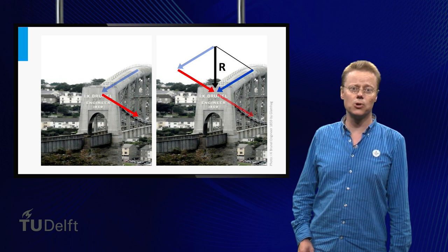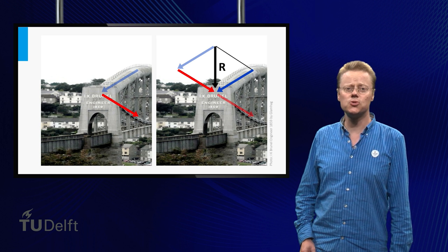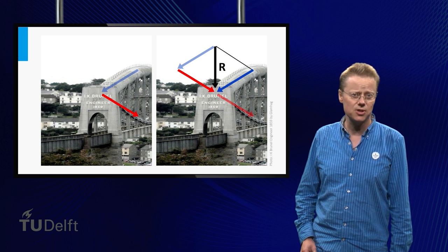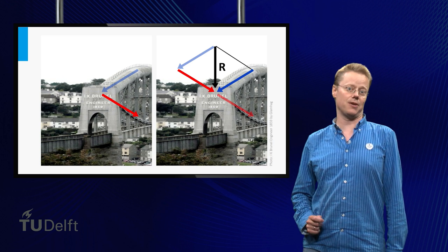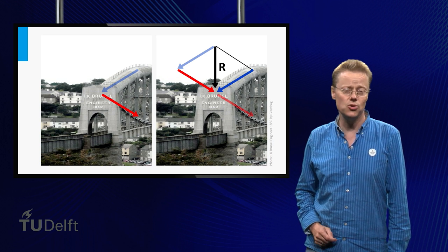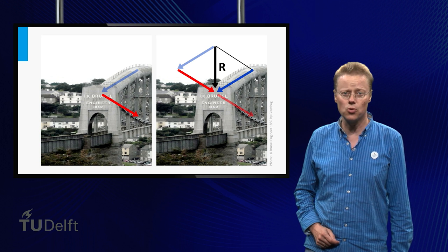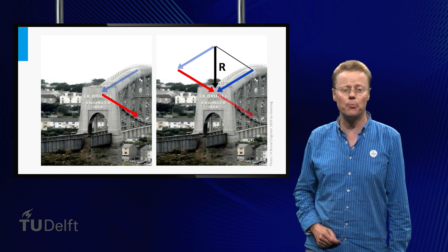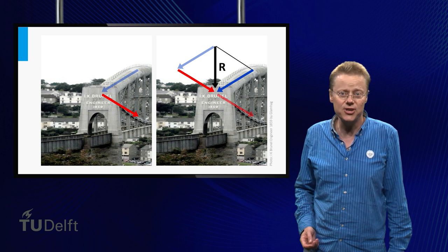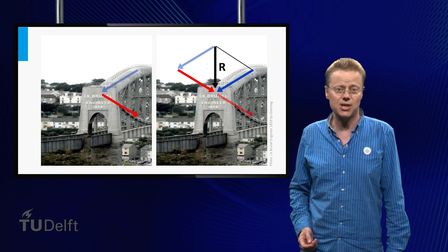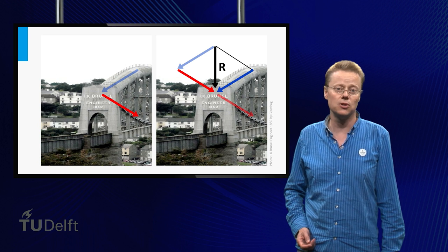Vector is a Latin word which means carrier. It was first used by 18th century astronomers investigating planet rotation around the sun. A vector is often used in geometry and in physics to represent physical quantities that have both magnitude and direction. Think of physical quantities like speed, movement, acceleration, and force.